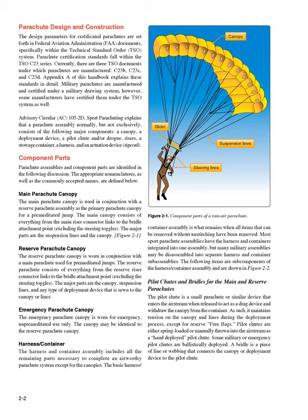The following items are subcomponents of the harness/container assembly, shown in Figure 2-2. Pilot Chutes and Bridals. The pilot chute is a small parachute or similar device that enters the airstream when released to act as a drag device and withdraw the canopy from the container. It maintains tension on the canopy and lines during the deployment process, except for reserve free bags. Pilot chutes are either spring-loaded or manually thrown into the airstream as a hand-deployed pilot chute. Some military or emergency pilot chutes are ballistically deployed. A bridle is a piece of line or webbing that connects the canopy or deployment device to the pilot chute.